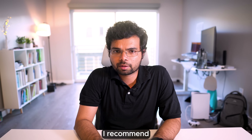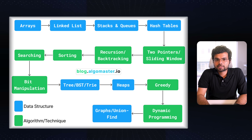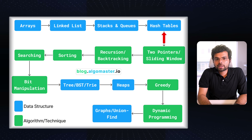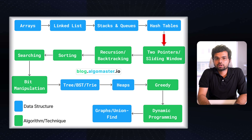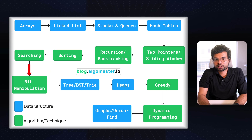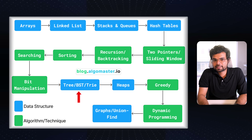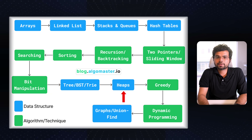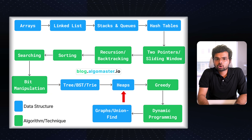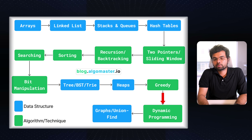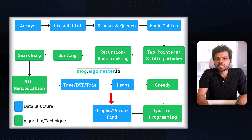Here is the order I recommend. Start with linear data structures like arrays, linked lists, stacks, queues, and hash tables. Then learn popular algorithms and problem-solving patterns like two-pointers, sliding window, recursion, backtracking, sorting, searching, and bit manipulation. Next, study hierarchical data structures like trees, binary search trees, tries, and heaps. After that, learn more complex algorithms like greedy and dynamic programming. Finally, study graphs and union-find data structures.